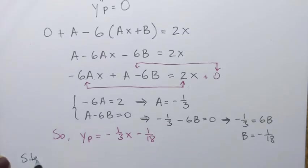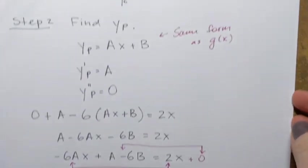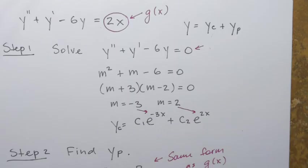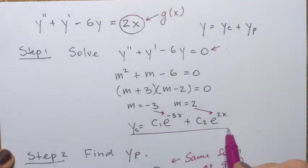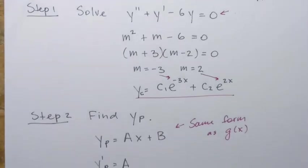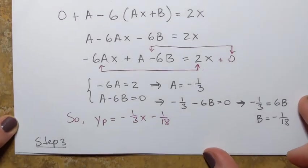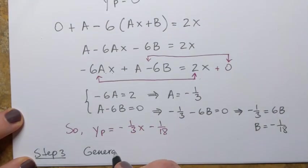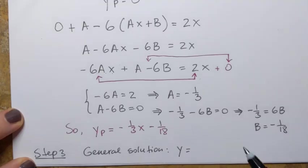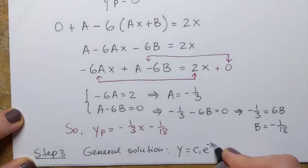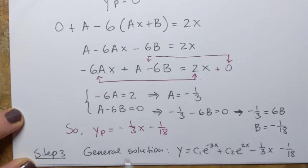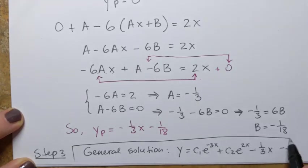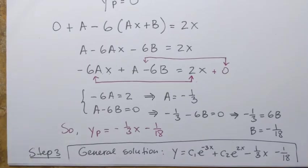Step three is to write down the general solution. The general solution has the form yc plus yp — we just add the results from steps one and two. So the general solution is: y equals c1 e to the power negative 3x plus c2 e to the power 2x minus one-third x minus one over 18. That is the general solution to the given non-homogeneous linear equation.